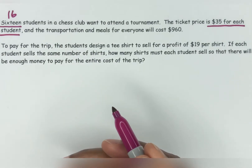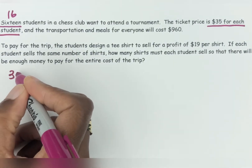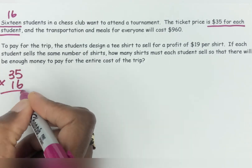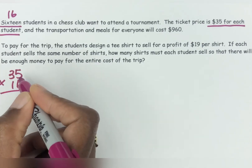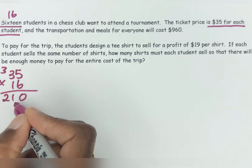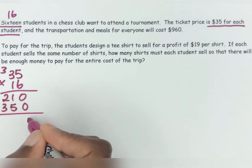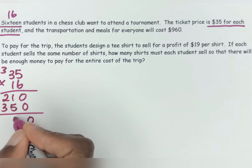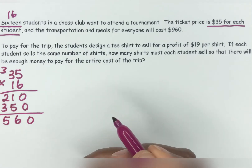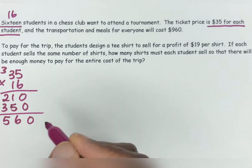So that would be our first math calculation: $35 times 16 students. So six times 5 is 30, and working through the multiplication, we get 560. So that's the ticket price for everybody.